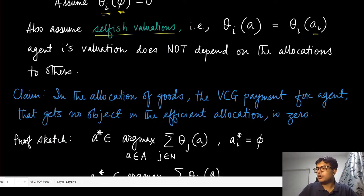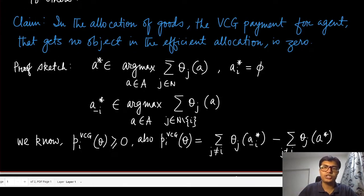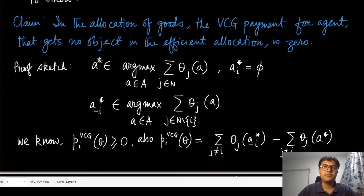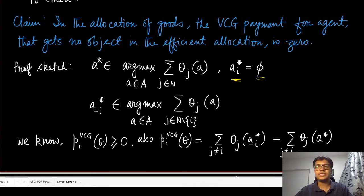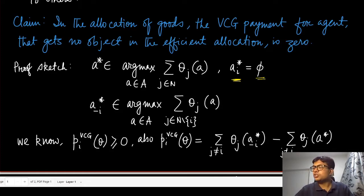In this context of allocating goods, the VCG payment for an agent that gets no object in the efficient allocation is zero. We know the VCG mechanism always picks the efficient allocation — the one that maximizes the sum of valuations of all agents. But suppose that in the efficient allocation, an agent gets no object; its allocation set is empty. The claim is that in that case the VCG payment will also be equal to zero.